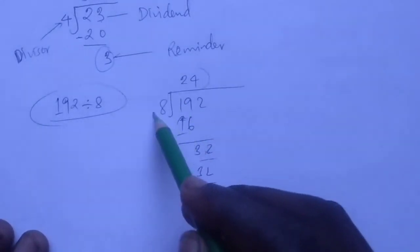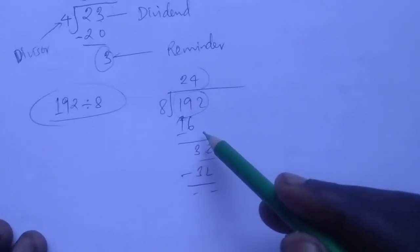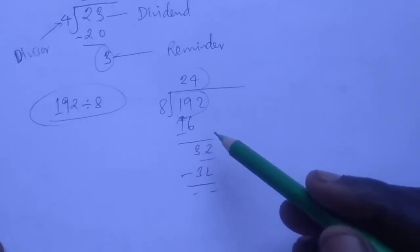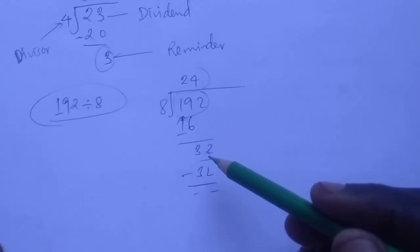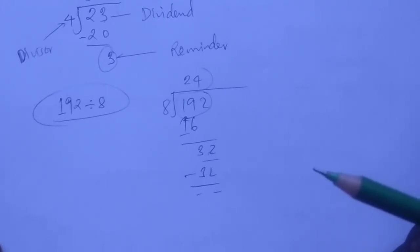Our quotient is 24, our divisor is 8, and our dividend is 192. Long division and short division - I hope you already understand these from your primary school mathematics.